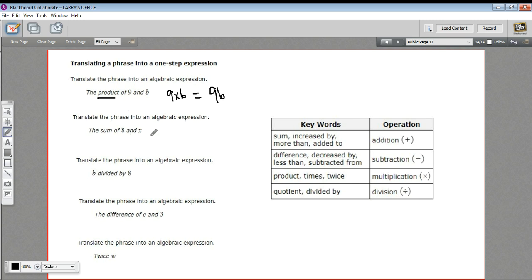Let's try the next one. This says the sum of eight and x. Well, sum means addition. So this can be eight plus x. Or you could write that as x plus eight. It works either way.